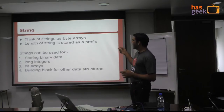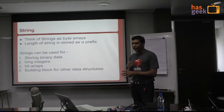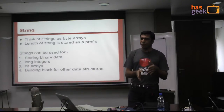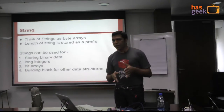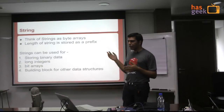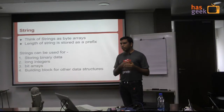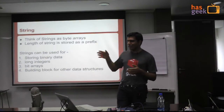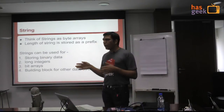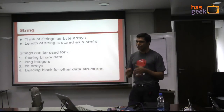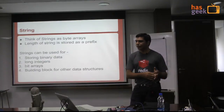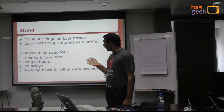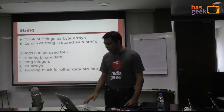Two important things about a string: it's a byte array, and the length of the string is prefixed. In C, to find the size of a string you have to go until you find the trailing slash zero. But in Redis, the length of the string is known beforehand. This is one of the fundamental data structures. The size of the header is fixed, not variable.